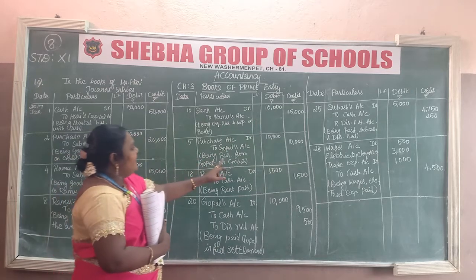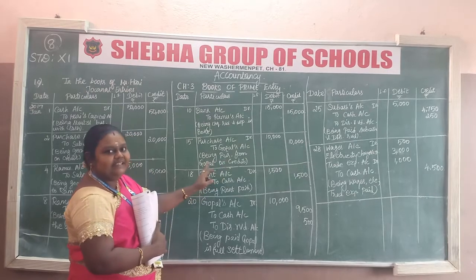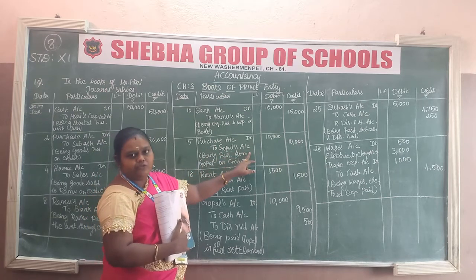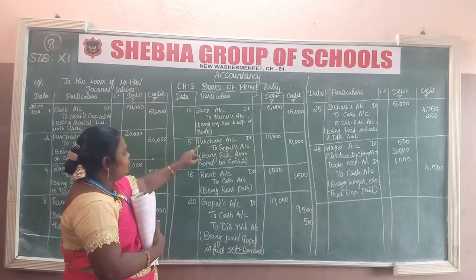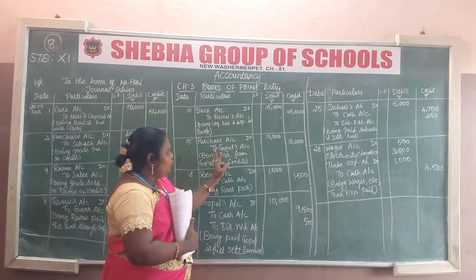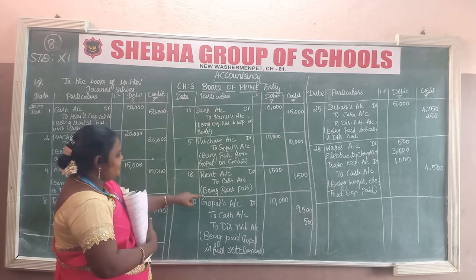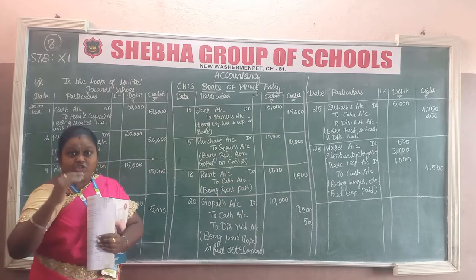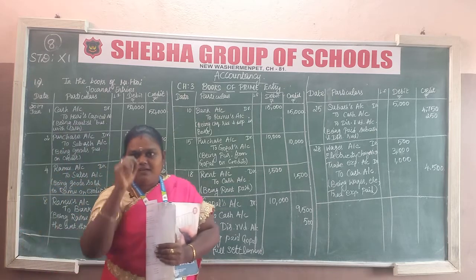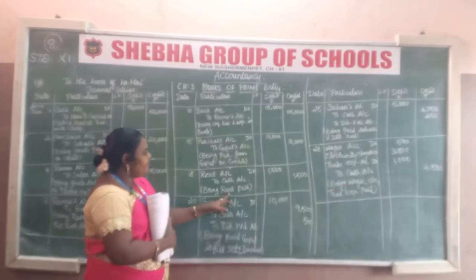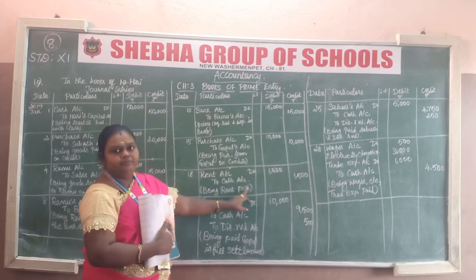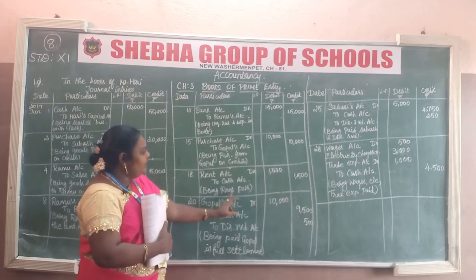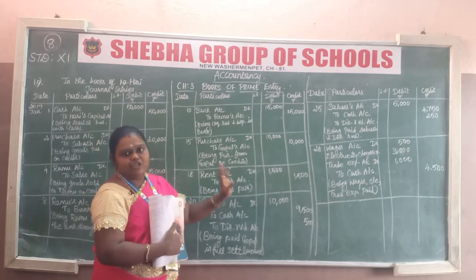Next transaction: purchase from Gopal on credit. The entry is: Purchase account debit to Gopal's account. The amount is Rs. 3,000.